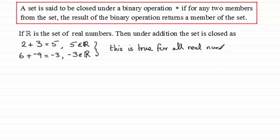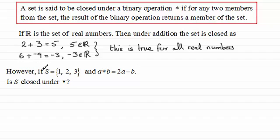Now what I want to do next is take another set. Let's say we take this set S, which is restricted to the numbers 1, 2 and 3. And I've defined a binary operation here, A star B, which equals 2A minus B. And the question is, is the set S closed under this operation?